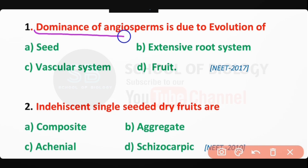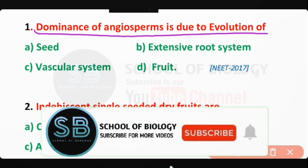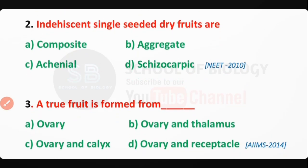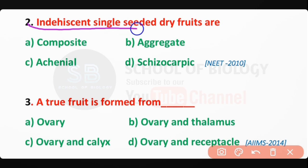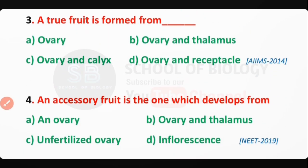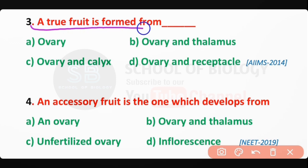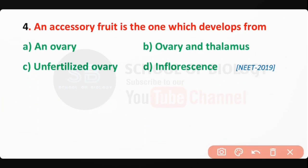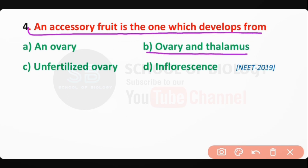Q1: Dominance of angiosperm is due to evolution of fruits — correct answer is option D. Q2: Indehiscent single-seeded dry fruits are known as schizocarpic fruits — correct answer is option D. Q3: A true fruit is formed from the ovary — correct answer is option A. Q4: An accessory fruit is one which develops from the ovary and thalamus — correct answer is option B.